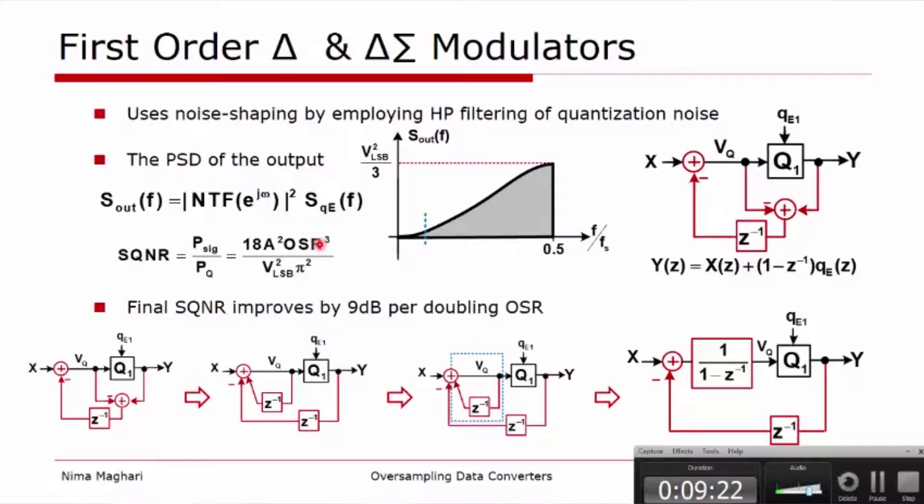And this is only for the first-order delta modulator. This structure is actually called delta modulator and is widely used in digital-to-analog converters. In analog-to-digital converters, we can simply move the delay inside the loop and we end up with the structure that is shown here, which is our falcon delta-sigma modulator because of the delta subtraction here and the integration afterwards.